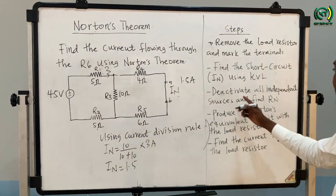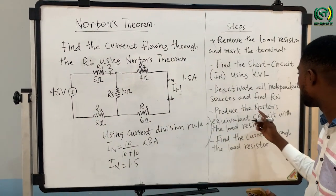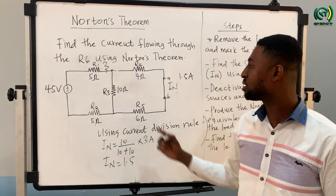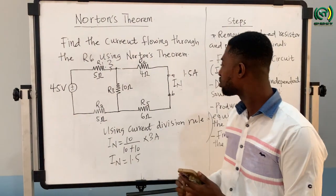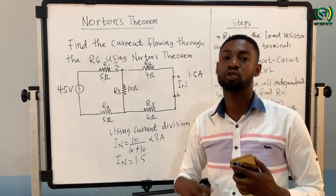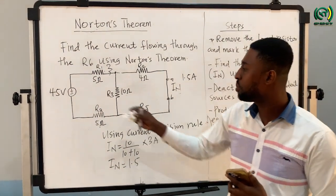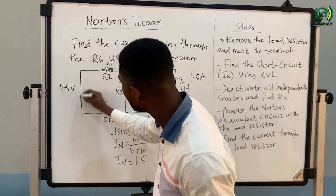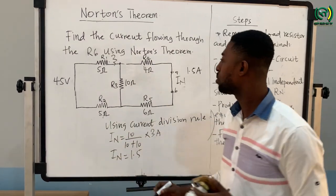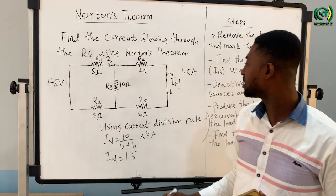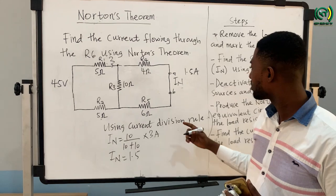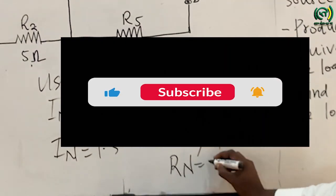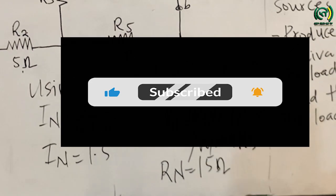Next, we deactivate all the independent sources and find RN. The only independent source in this question is the voltage source, so we deactivate it. Anytime you deactivate a voltage source, you represent it with a short circuit. Once represented as a short circuit, we calculate RN and the value comes out to 15 ohms.